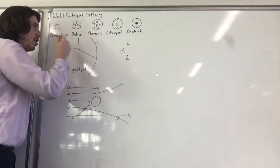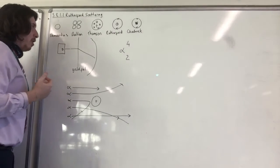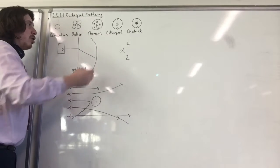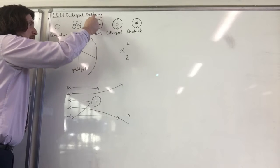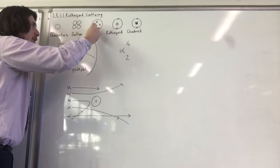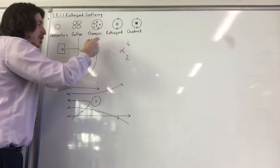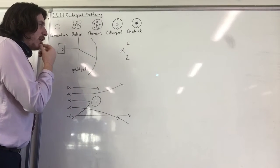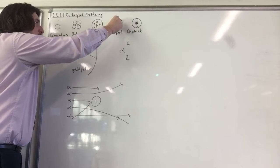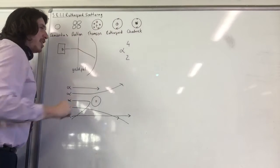JJ Thomson discovered the electron and came up with his Plum Pudding model and talked about how it was a positively charged sphere with the electrons inside. And then Rutherford used Rutherford scattering to find the nuclear model and the idea that there was a nucleus and most of the atom was empty space.